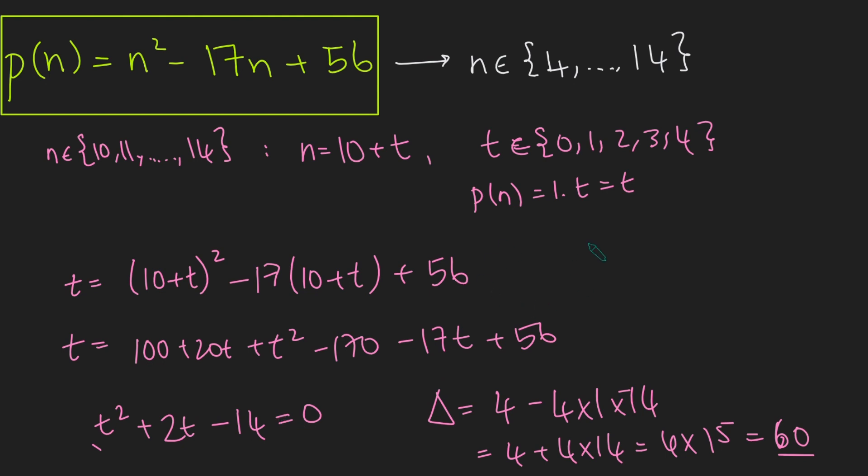And that tells us that there are no solutions amongst 0, 1, 2, 3, 4. And therefore, our only solution to this problem here is n equals 4. There are no other solutions.